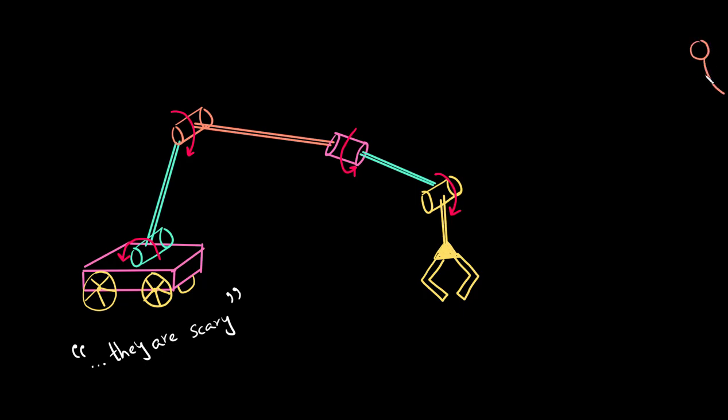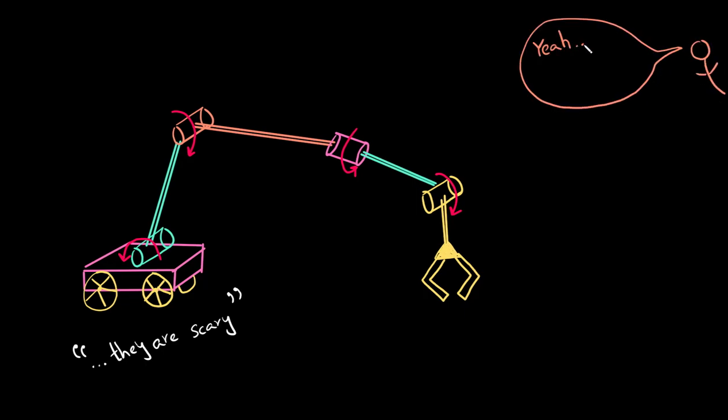Or have you been more geeky than that and actually thought how do the robots know where they are? Or even how do the robots know where to move to pick an object or to perform any task for that matter?